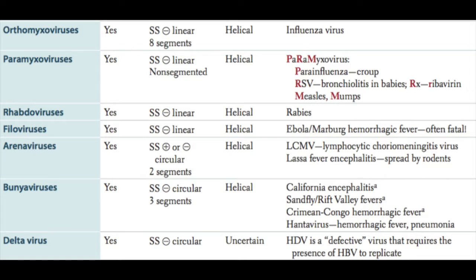Rhabdoviruses have a helical capsid symmetry and include the rabies virus. Filoviruses also have helical capsid symmetry and include Ebola and Marburg hemorrhagic fever viruses, which are often fatal. Arenaviruses have a helical capsid symmetry as well, with two segments to their genome, and they include LCMV — lymphocytic choriomeningitis virus — and the Lassa fever encephalitis virus, which is spread by mice.